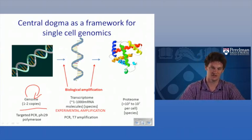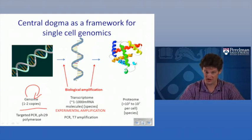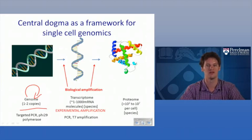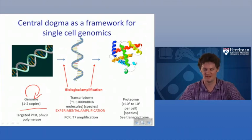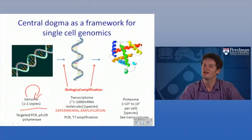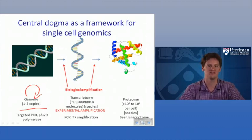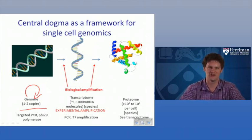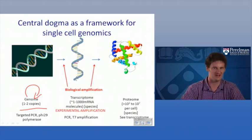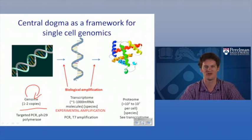We'll talk about T7 amplification, which uses an RNA polymerase-based method with certain advantages in terms of the linear nature of the amplification. The proteome is the unfortunate bystander here. Even though there are so many more copies per cell of individual proteins, there is really no way to take one protein and turn it into more proteins, so you have to go back and infer from the transcriptome level in the vast majority of cases.